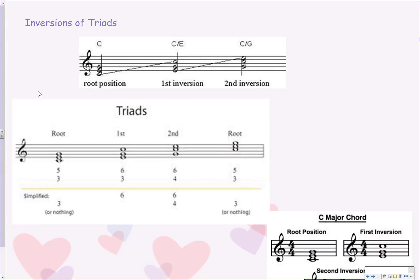Let's quickly review inversions of triads: root position, first inversion, second inversion. Note the chord symbols at the top. We have just a C for root position, C/E meaning the piano player should play E as the lowest note, and C/G for second inversion — play a C major triad with G in the bass. Here are our triads in root, first, and second position with full Arabic numerals: 5-3, 6-3, 6-4-5-3 — and simplified versions.